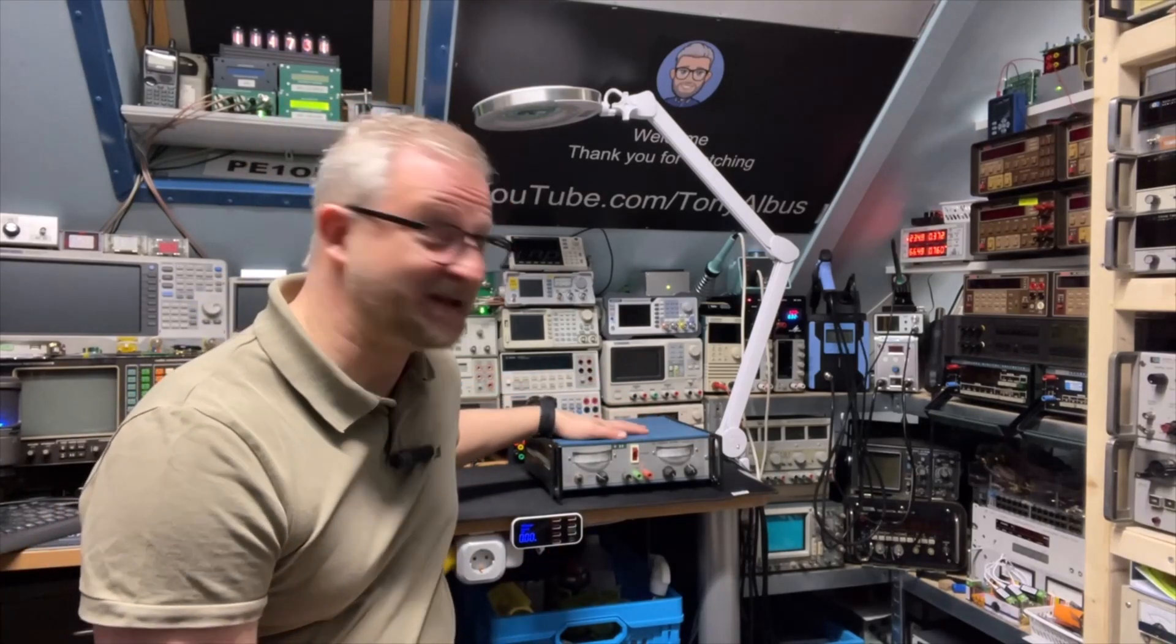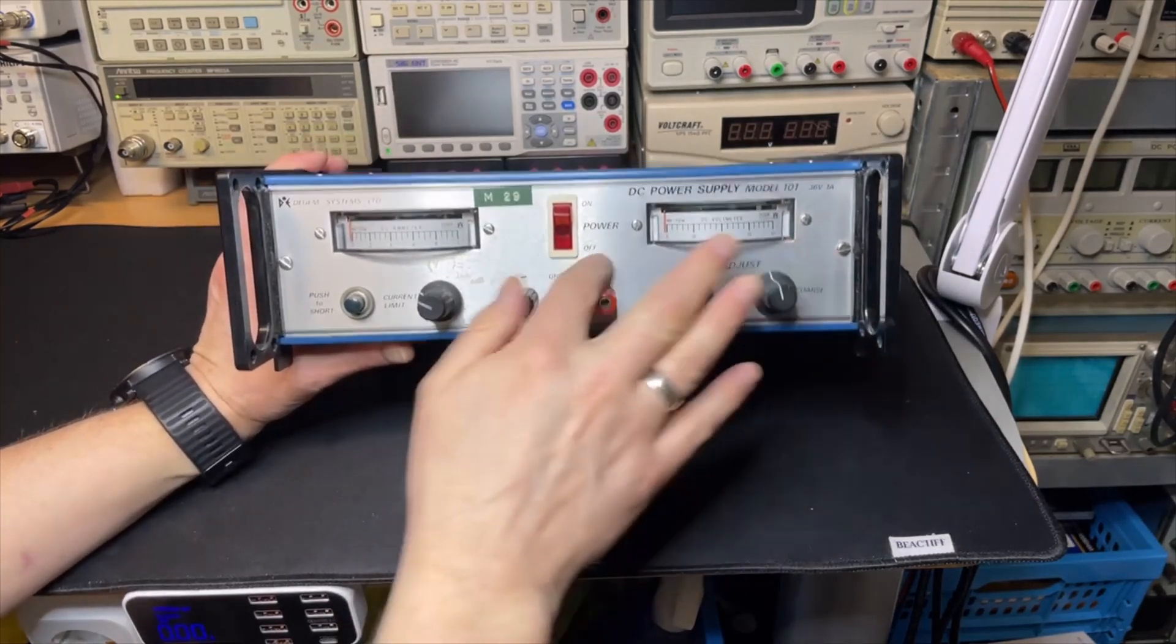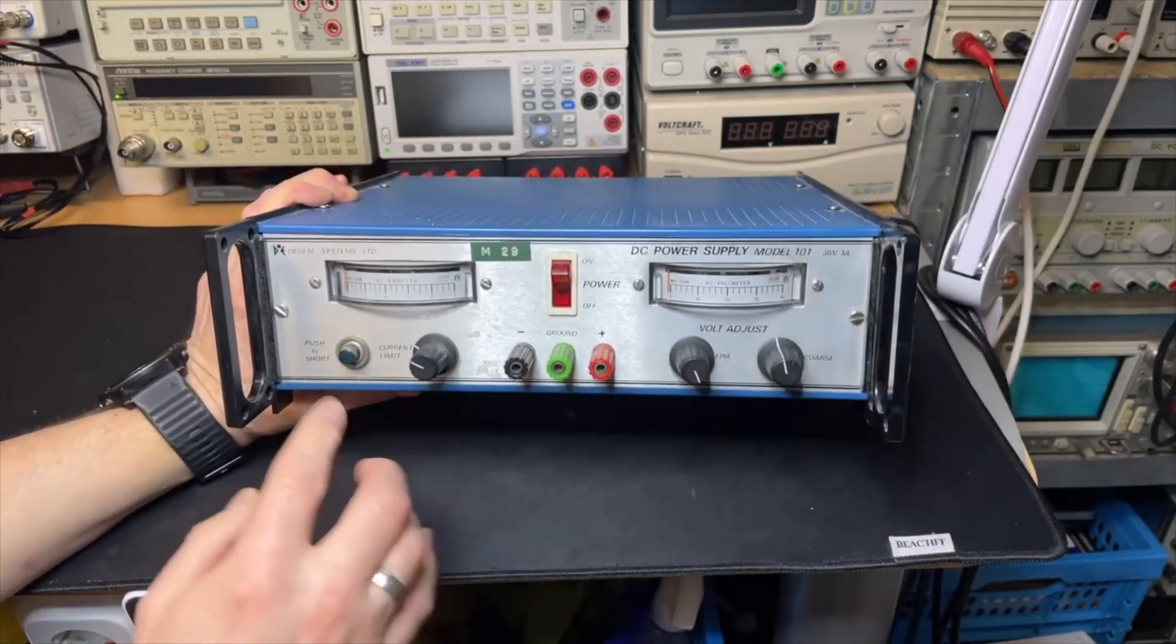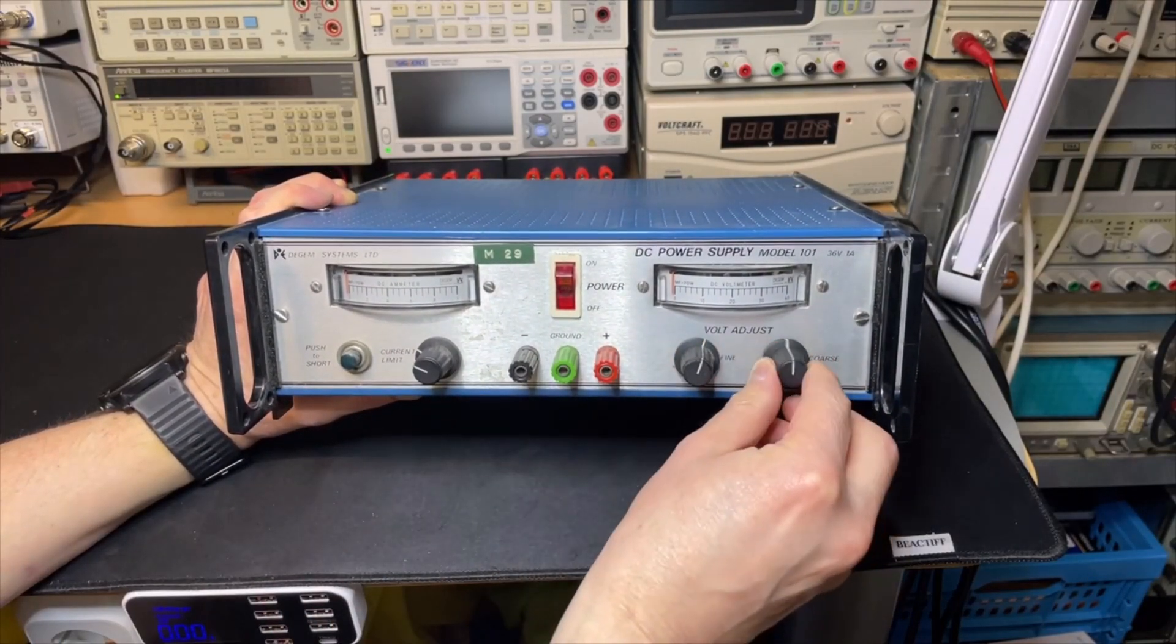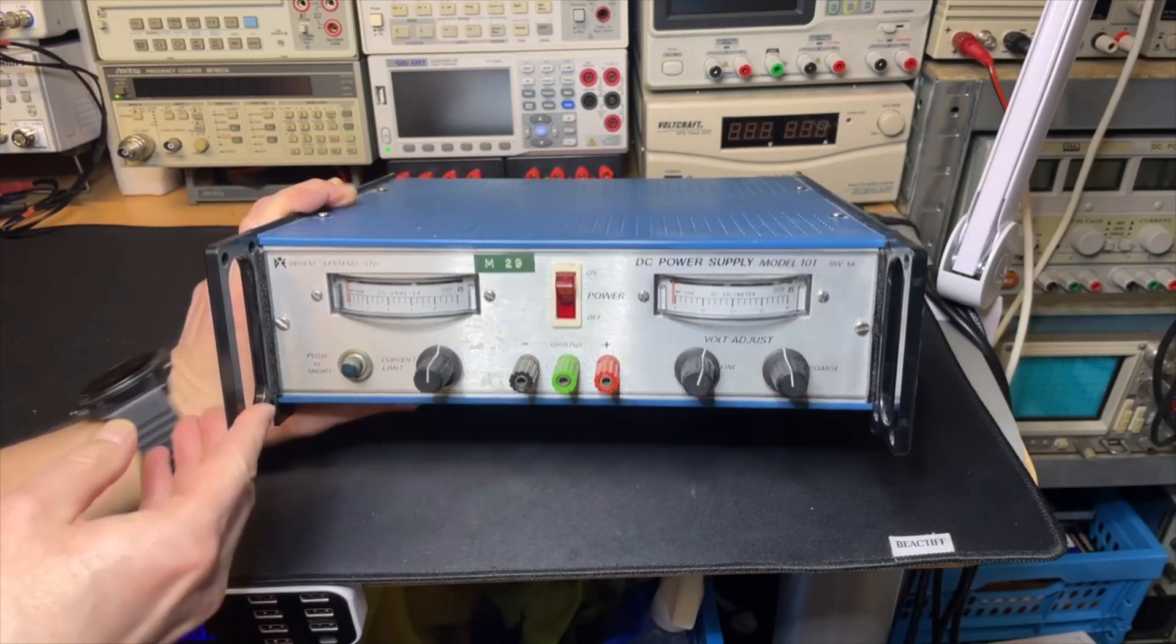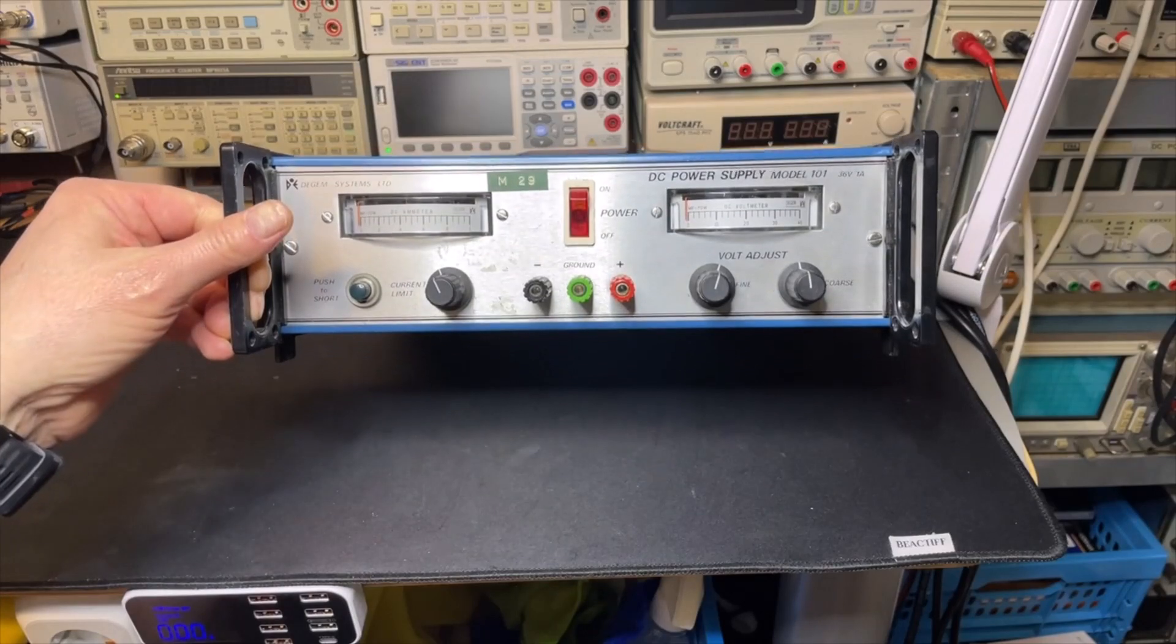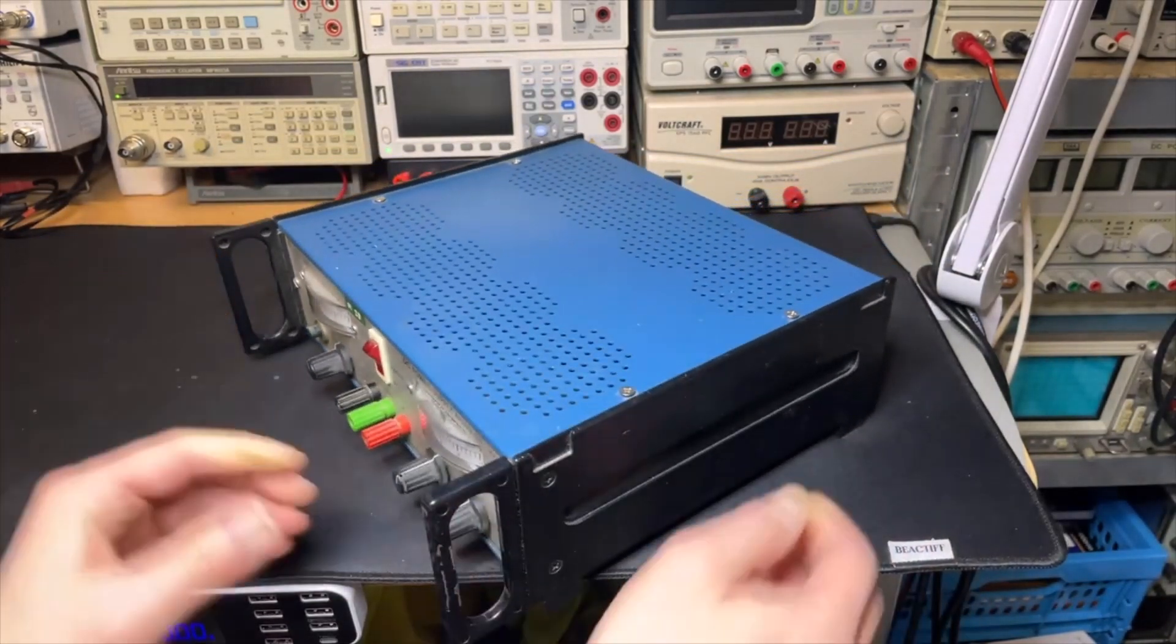Here we have it from the front. Nice aluminum front and these meters are amazing. Look at this, they still work, at least it seems. It has very basic controls: voltage adjust, fine adjust, it has a current limit, and a push to short button so you probably need to short it to set the current limit.